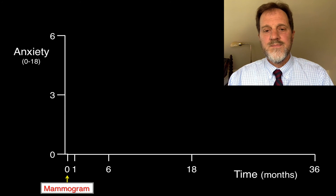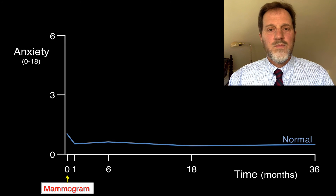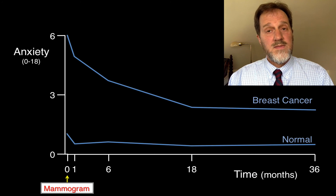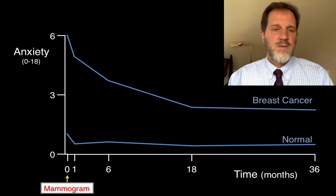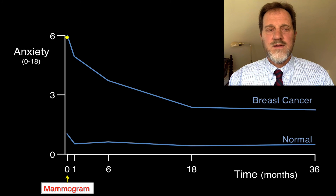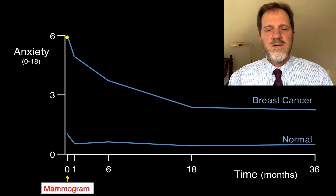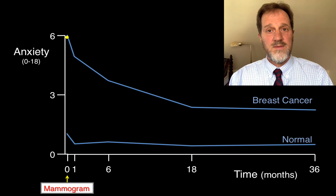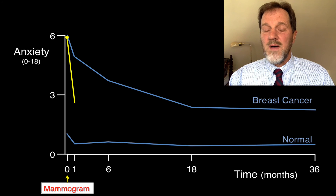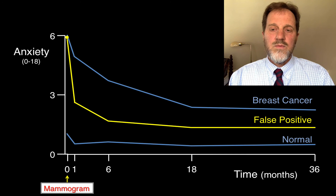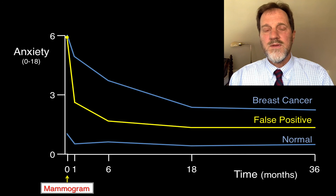The outcome here is anxiety. Women with normal mammograms don't experience much anxiety. Women with breast cancer have more anxiety. Women with false positive results start at the same high level as cancer patients at time zero — because immediately following the mammogram, women don't know which group they're in. One month later, anxiety levels drop in the false positive group as they're told they don't have breast cancer. But even three years out, women with false positive test results have anxiety levels somewhere between women with a normal mammogram and women with breast cancer.